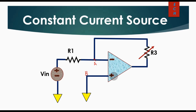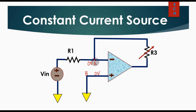You can see the voltage at the non-inverting terminal is zero volts, so the voltage at node A would also be zero volts. Now if you want to find out the current flowing through resistance R1, let us proceed.